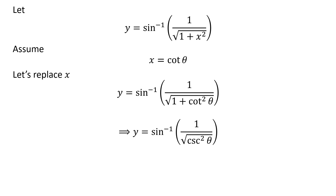We know 1 plus square of cotangent of theta is equal to square of cosecant of theta. This trigonometry identity has been verified in the video appearing at the upper right corner; the link is also given in the description. So, y is equal to inverse of sine of 1 upon square root of square of cosecant of theta.